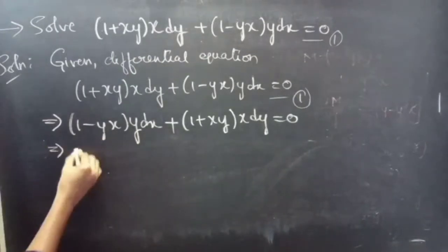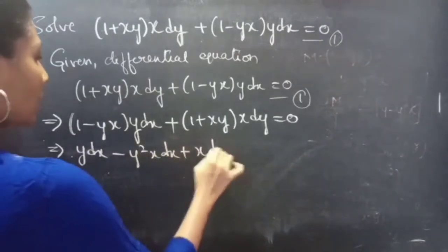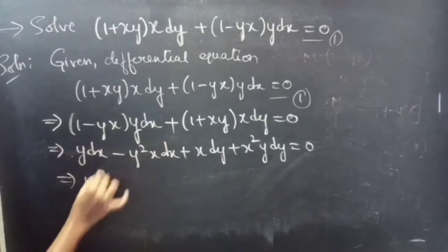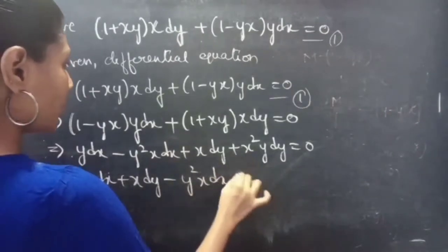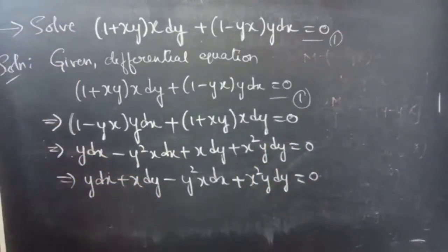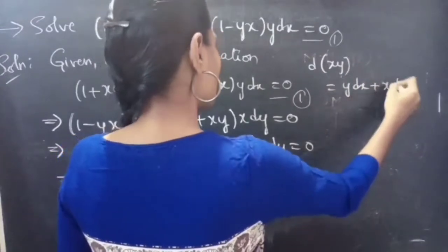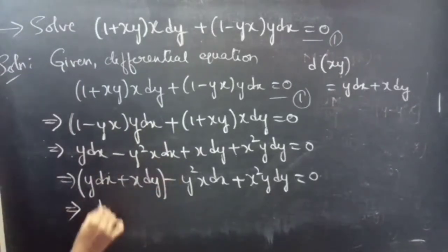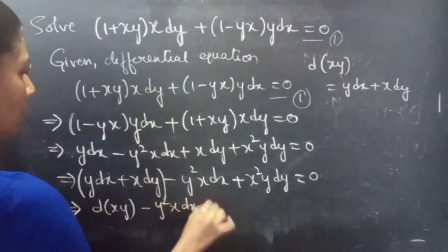Now we can write the equation as y dx − y²x dx + x dy + x²y dy = 0. Again, we can rewrite it as (y dx + x dy) − y²x dx + x²y dy = 0. We know that d(xy) = y dx + x dy.